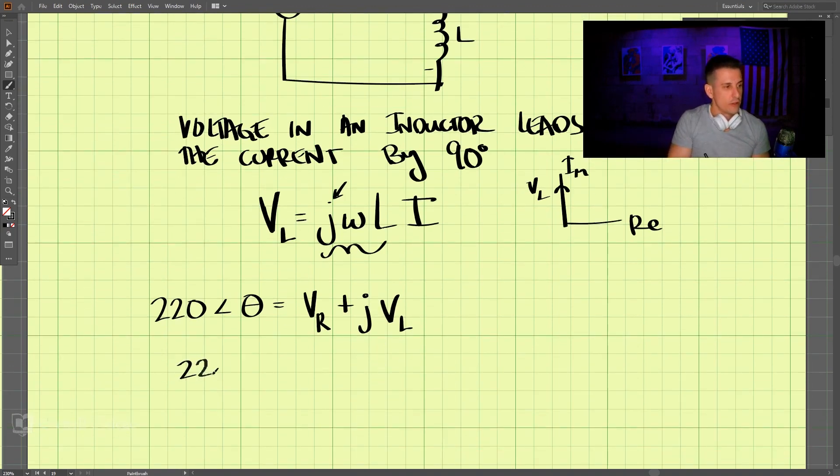Substituting this in, we have 220 at an angle θ we don't know, and we have 170 plus jVL equals 220.